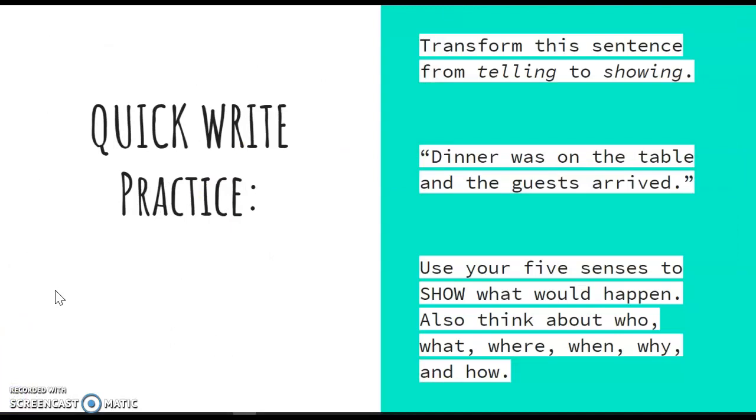Alright, so now that you've got that written down, here are some things that I want you to consider. Transform this sentence from telling to showing. Dinner was on the table and the guests arrive. Do we have the basic idea and we understand what's going on? Sure, but this is a summary. Remember, we're trying to tell a story. I want you to use your sensory images, your smell, taste, touch, sound, sight to show what would happen. I also want you to think about who, what, where, when, why, and how. Go ahead and pause this video and revise those sentences now to show that dinner was on the table and the guests arrived versus just telling me. When you're done, come back to this video and let's take a look at some things that you could have done.